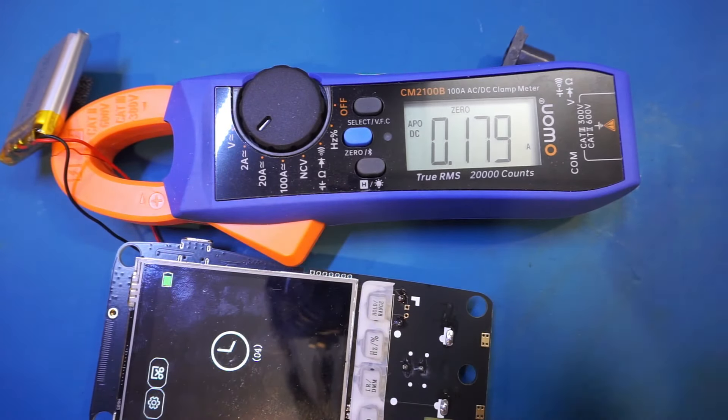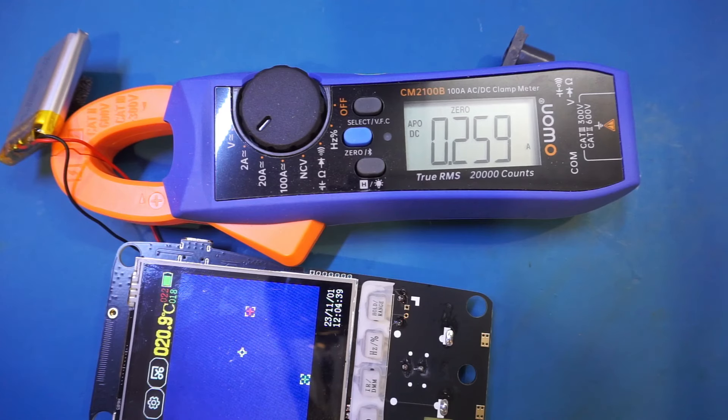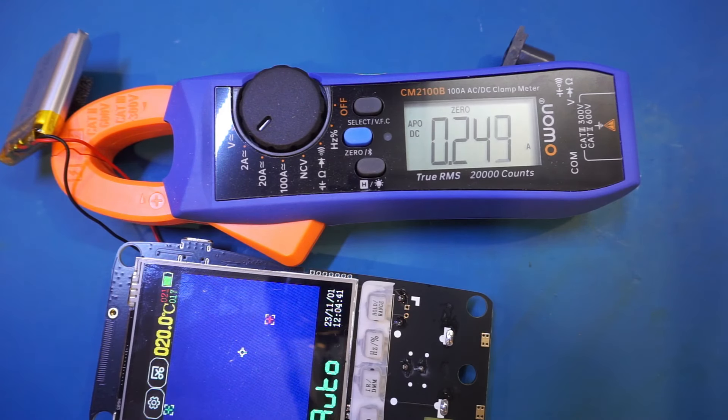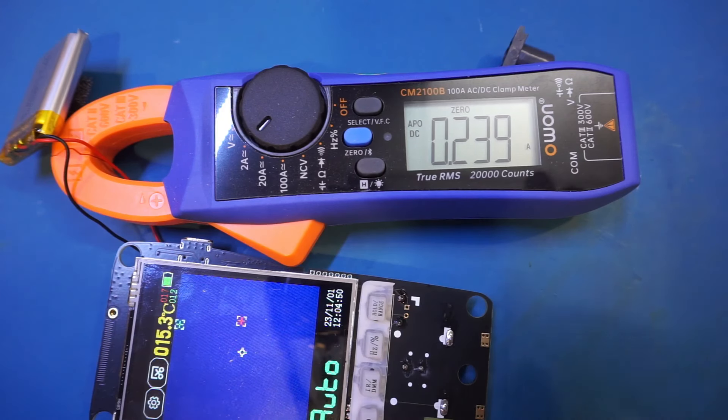And now let me switch to IR mode. You can see the current draw significantly increased. So we're drawing about 250 milliamps, give or take. In this mode, you can expect it to run for about 4 hours.